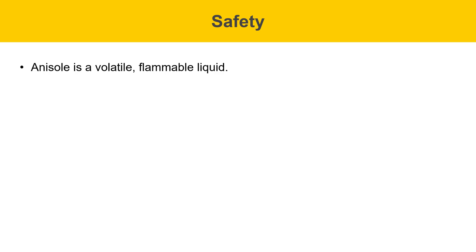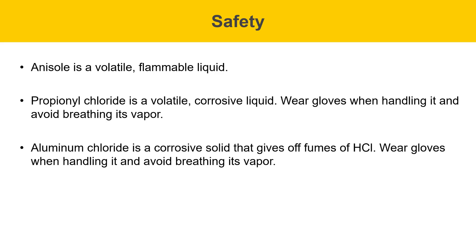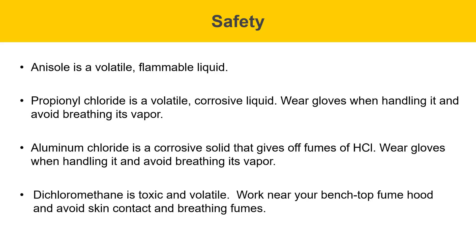Some safety items for the lab are described on this slide. Anisole is a volatile flammable liquid. Propionyl chloride is a volatile corrosive liquid — wear gloves when handling it, avoid breathing its vapor, and use it in a well-ventilated space. Aluminum chloride is a solid; it's corrosive and gives off corrosive HCl gas — wear gloves and avoid breathing its vapor, and handle it in a well-ventilated space. Dichloromethane is a toxic and volatile solvent — work near your benchtop fume hood, avoid skin contact, and avoid breathing the fumes.